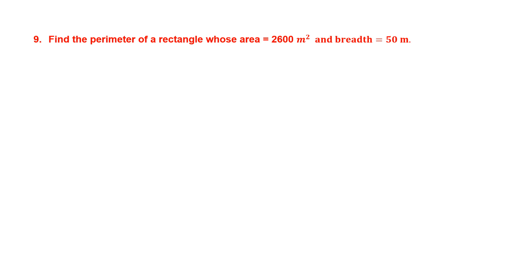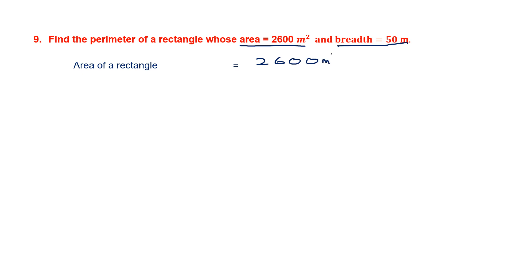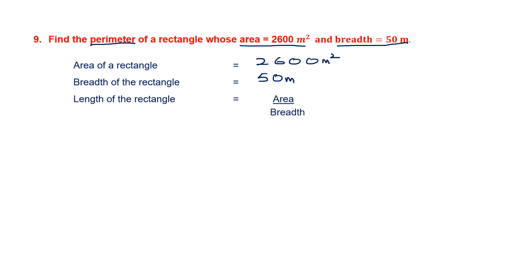Question 9. Find the perimeter of a rectangle whose area has been given and breadth has been given. Area of the rectangle is 2,600 meter squared. The breadth of the rectangle is 50 meters and we have been asked to find the perimeter. To find the perimeter we need the length and breadth. Since we don't have the length, we are going to find that using the formula area divided by breadth.